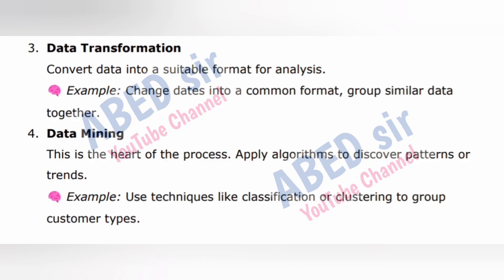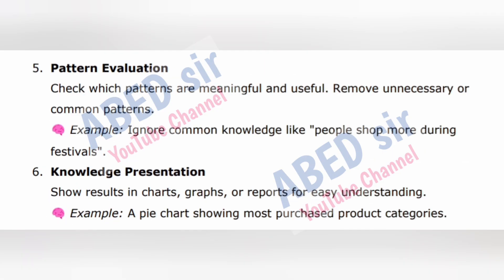4. Data Mining — this is the heart of the process. Apply algorithms to discover patterns or trends. Example: use techniques like classification or clustering to group customer types. 5. Pattern Evaluation — check which patterns are meaningful and useful; remove unnecessary or common patterns. Example: ignore common knowledge like 'people shop more during festivals'. 6. Knowledge Presentation — show results in charts, graphs, or reports for easy understanding. Example: a pie chart showing most purchased product categories.